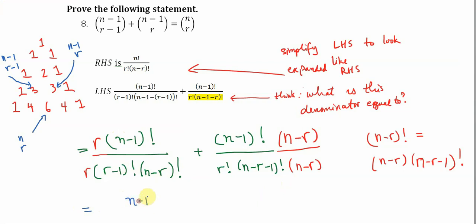So the numerators, I'm going to keep exactly the same. I'm going to say n minus one factorial times r. And over here, this is going to be n minus one factorial times n minus r.